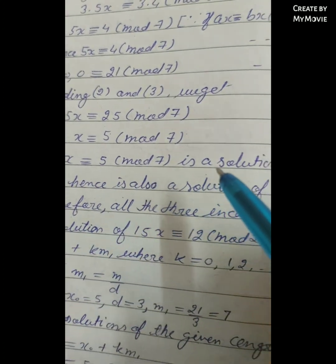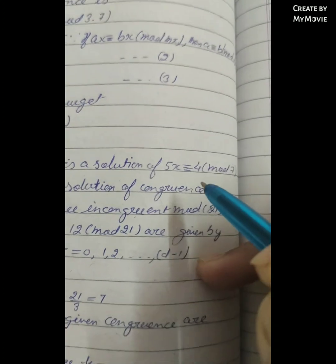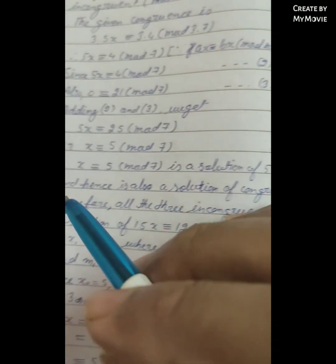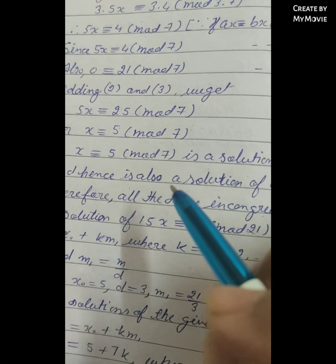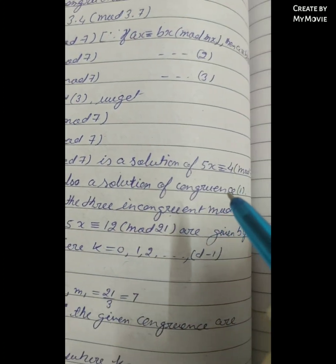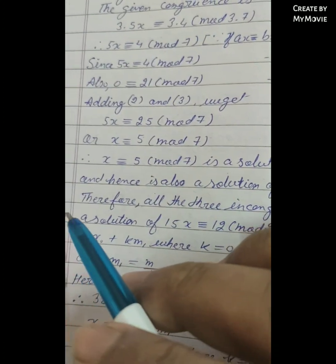So x ≡ 5 (mod 7) is a solution of 5x ≡ 4 (mod 7), and hence is also a solution of congruence 1. Therefore,